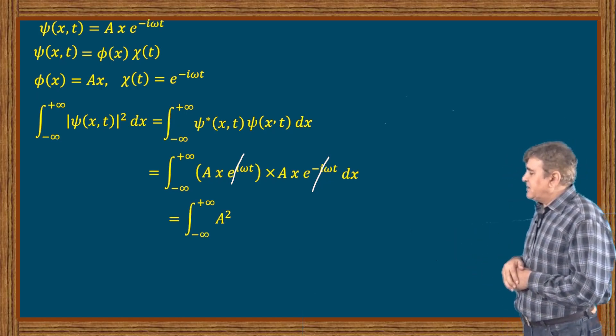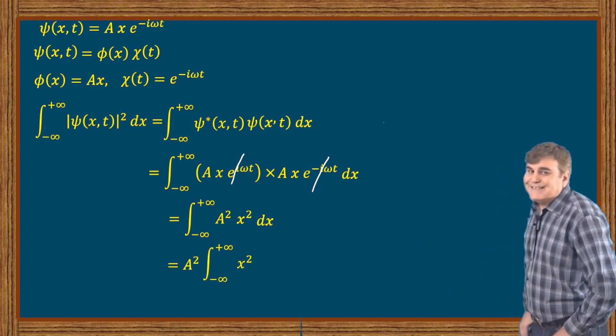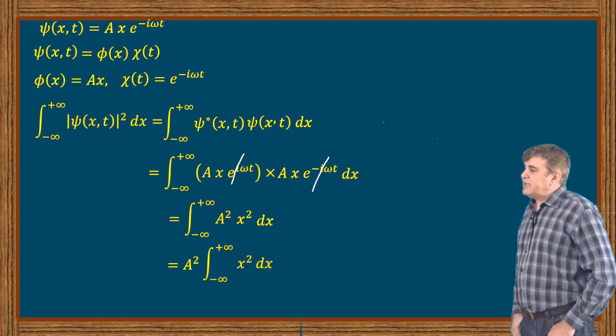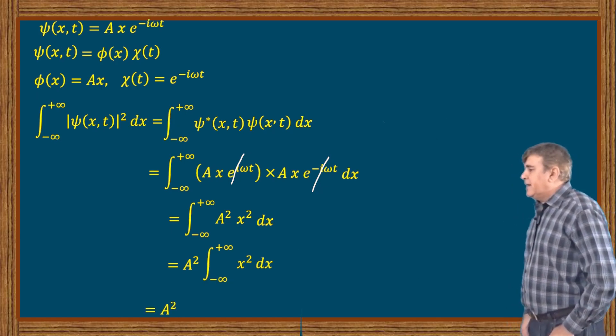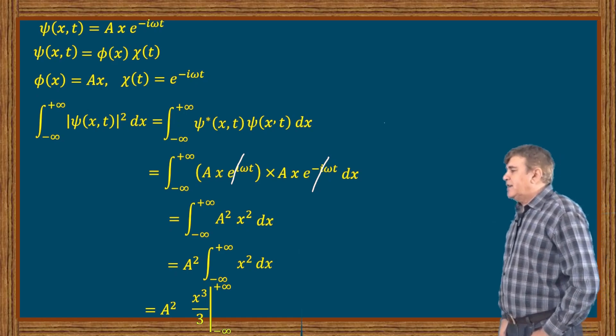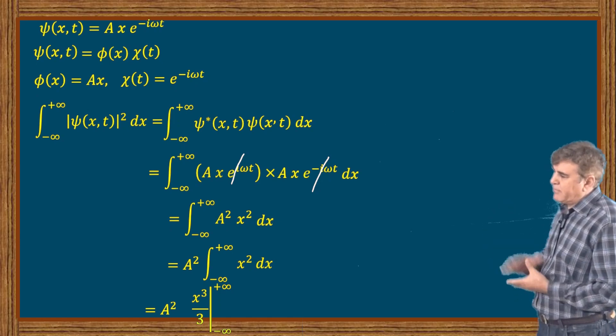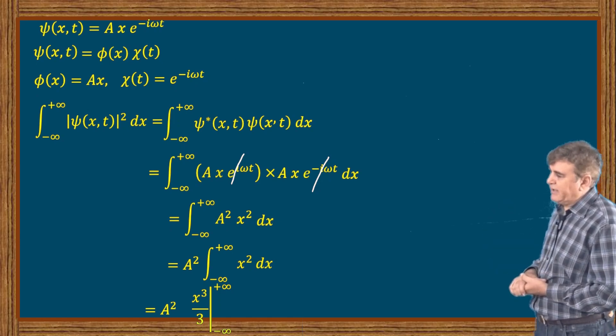Taking the normalization constant out of the integral and integrating x², I can write A² multiplied by x³/3, and putting the limit from minus infinity to plus infinity.